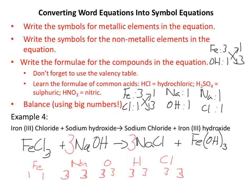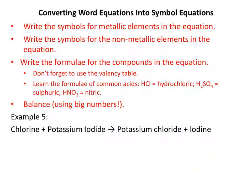And that is as complicated as any equation you're going to meet on the IGCSE specification. So we've got one more example for you. It's a displacement reaction involving group 7 elements. What we're going to do first of all is write the symbols for metallic elements in the equation, and there aren't any metallic elements in the equation.